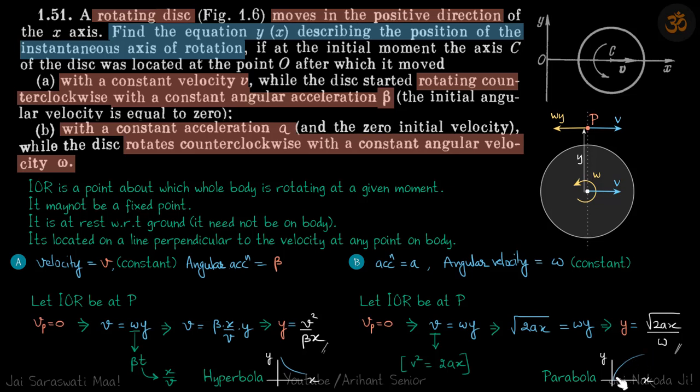Squaring the result gives y² proportional to x, which is the equation of a parabola. So in the second case the axis of rotation is moving away from the center, while in the first case it is moving towards the center.